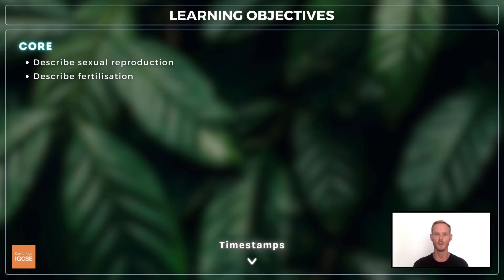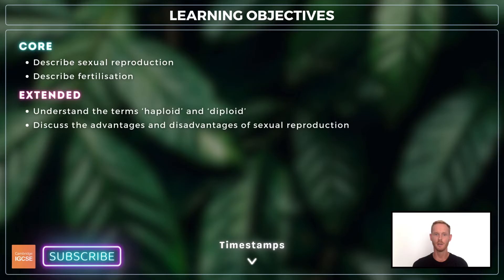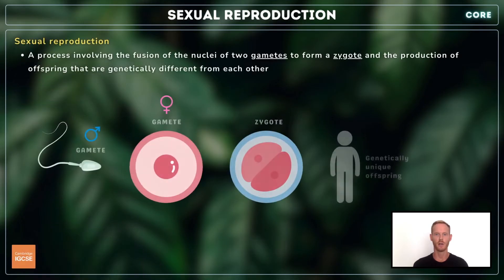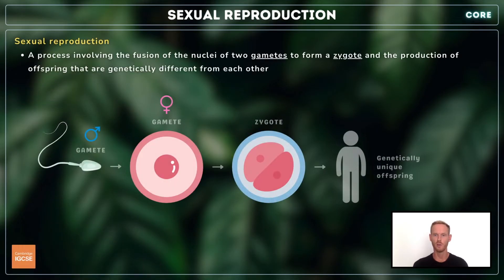you need to describe the terms sexual reproduction and fertilization, and for extended, apply the terms haploid and diploid, and discuss the advantages and disadvantages of sexual reproduction. Sexual reproduction is a process involving the fusion of the nuclei of two gametes to form a zygote, and the production of offspring that are genetically different from each other.